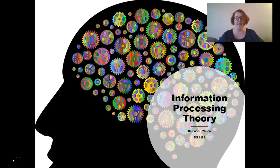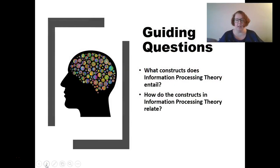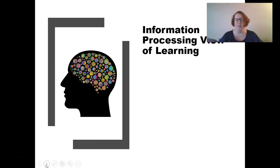Today we're going to discuss the next learning theory, which is information processing theory. So let's get started. Learning information processing theory is going to be a really big change from the other things we've done so far in class. It's really going to look at the brain and learning from a neuropsych perspective, thinking about the brain as a computer and the components of the brain as components of learning. We're really going to be thinking about the constructs and how those constructs relate to each other.